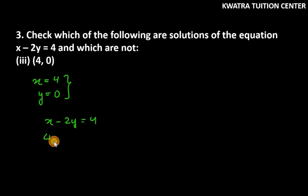x ki jaga 4 put kareenge, 2 as it is, y ki jaga 0. So left hand side pe aap ke paas kya bacha? Only 4, because 2 into 0 is 0. And right hand side ke paas kya bacha aap ke paas? 4 only. So 4 is equal to 4. That means left hand side is equal to right hand side.